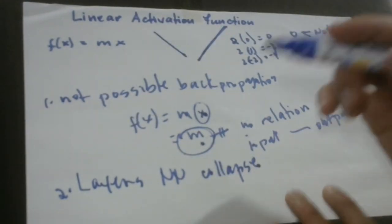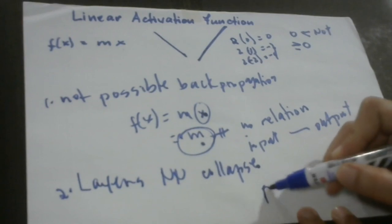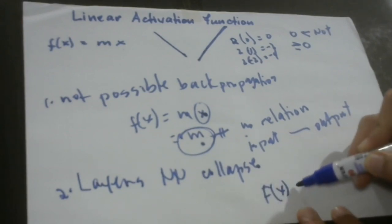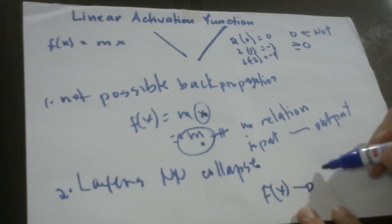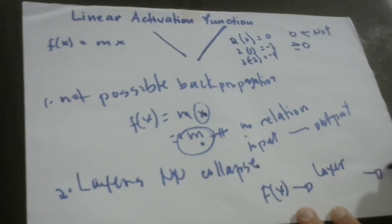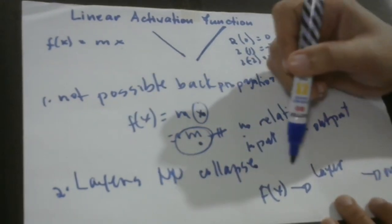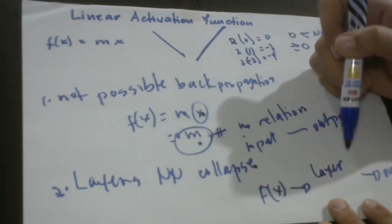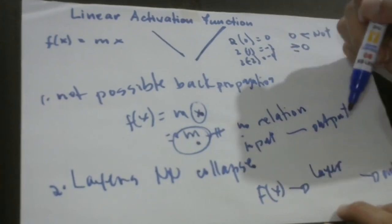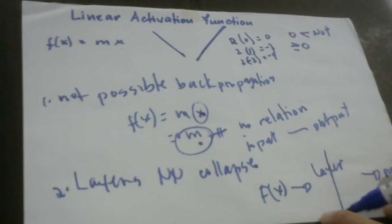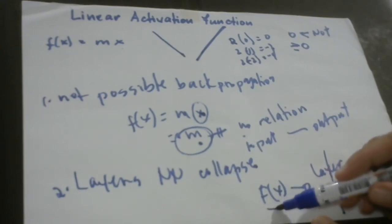The other one is that the layers of our neural network will just collapse if we use linear activation function. So let's remember this: we have this first one, fx, and we have these layers here. Then we have this output. So we have said that there is no transfer of learning from the input to the output. And it seems like this layer does not exist. So there is no need for us to go through this part of our neural network because it has no value at all.